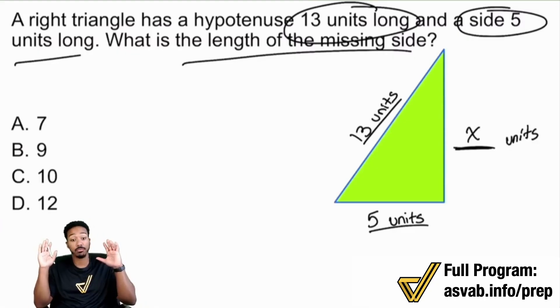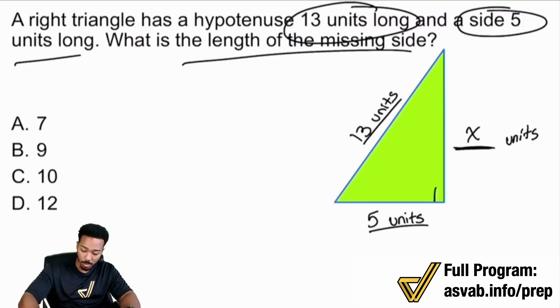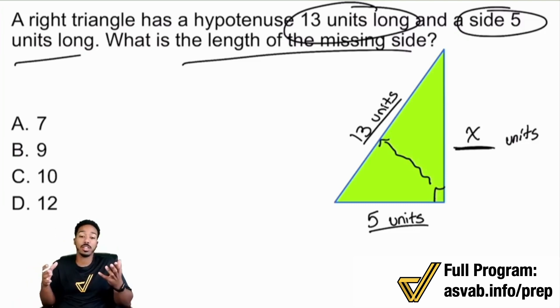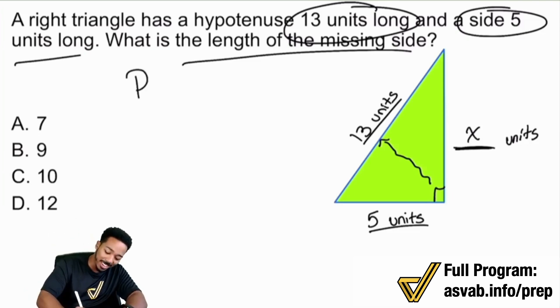So far, so good. Again, right triangle. My hypotenuse is always going to be across the right angle. Boom, right there. And so we just have to understand that we're looking for that missing side. What should we be thinking automatically? Pythagorean theorem. Pythagorean theorem all day here.